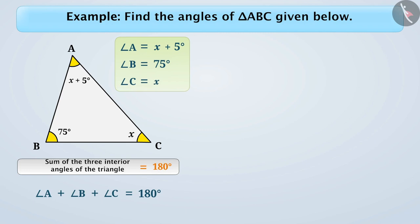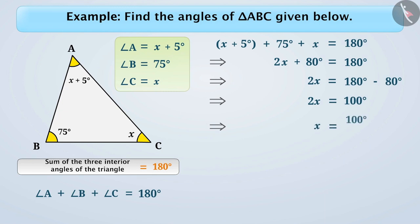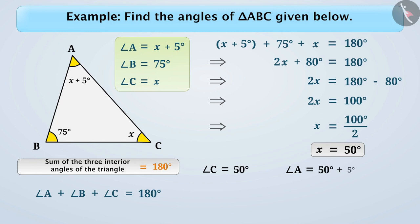If we substitute these values in the equation, then we get x plus 5 plus 75 degrees plus x is equal to 180 degrees. That is, 2x plus 80 degrees is equal to 180 degrees. We can write it as 2x is equal to 180 degrees minus 80 degrees, which means 2x is equal to 100 degrees, or x is equal to 50 degrees. Therefore, angle C is equal to 50 degrees and angle A is equal to 50 degrees plus 5 degrees, which is 55 degrees.